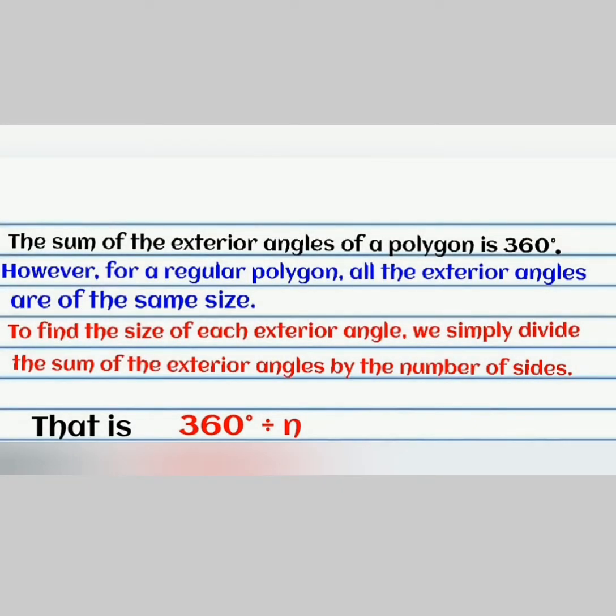The sum of the exterior angles of a polygon is 360 degrees. However, if the polygon is regular, all the exterior angles will be of the same size. So, to find the size of each exterior angle, we simply divide 360 degrees by the number of sides, n.